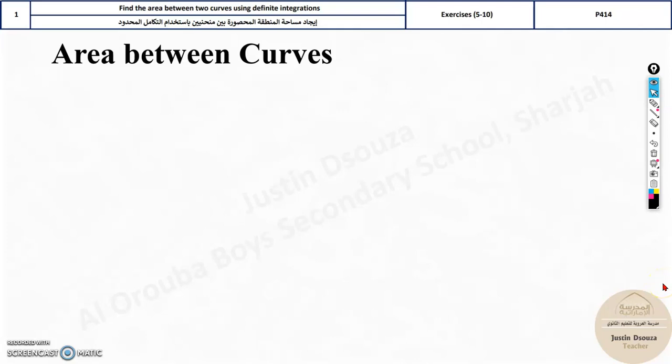Welcome to the first explanation video of the end of term 3 exam topics. It is area between curves. The first topic is to find the area between two curves using definite integration. Definite integration means you need to know the limits, apply and solve.